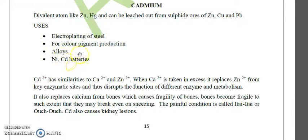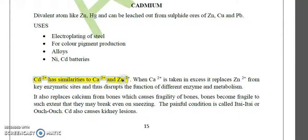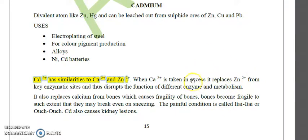Cadmium is also used in nickel-cadmium batteries. One peculiar thing about Cd²⁺ is its similarity to Ca²⁺ and Zn²⁺. When Cd²⁺ is taken in excess, it generally replaces Zn²⁺ from key enzymatic sites, because zinc is generally the cofactor in most enzymes in our body, thus altering the function of different enzymes and metabolism. It also replaces calcium from bones, since both are divalent, causing fragility of bones.